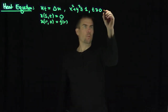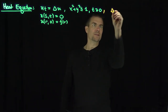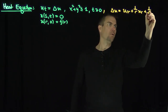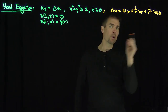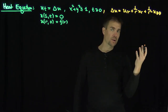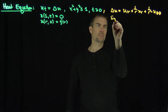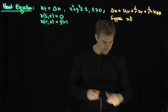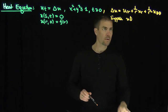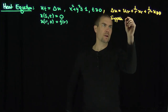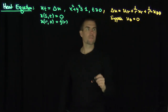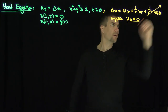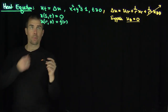We put the Laplacian into polar coordinates. Recall that the Laplacian of u is u_rr plus (1/r) u_r plus (1/r²) u_θθ. We suppose that u_θθ equals 0, and in fact u_θ equals 0 — there's no angular dependence on the solution. So the u_θθ part drops away from the Laplacian.